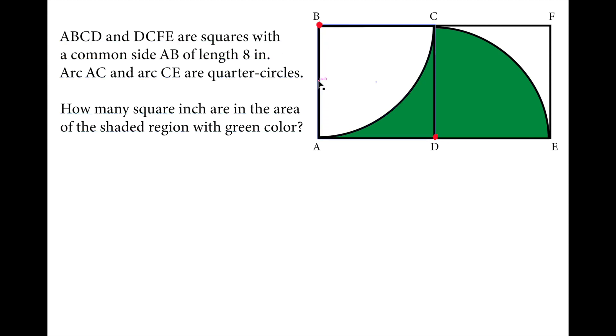We are given the side length of the square is 8 inches. That's important information. This side is 8 inches and this side is 8 inches. This means also the radius of the circle and this side of the square and the radius of the circle are the same.